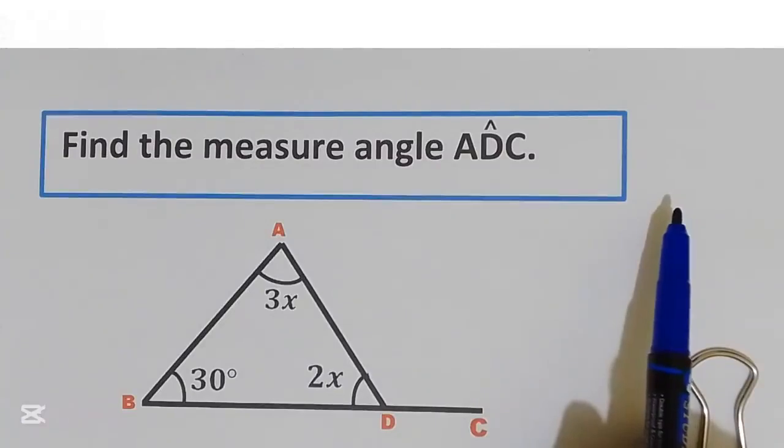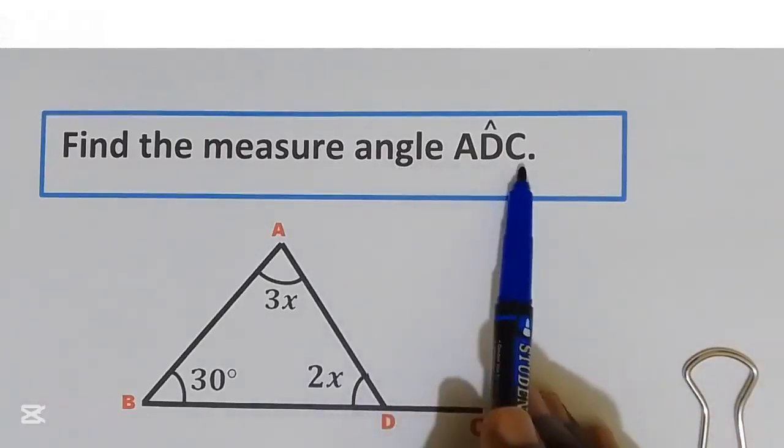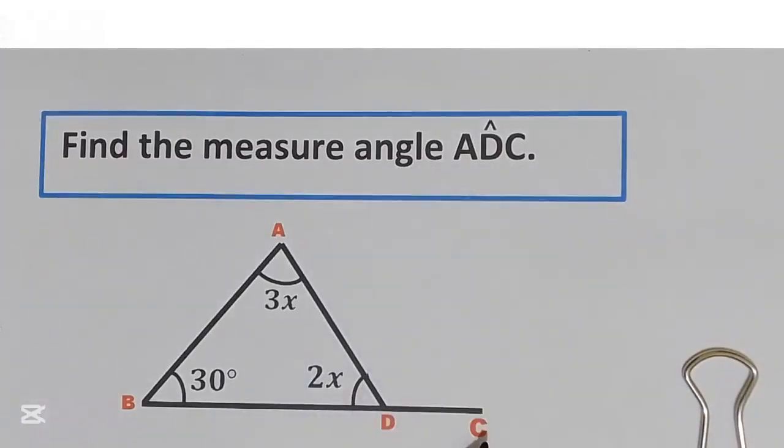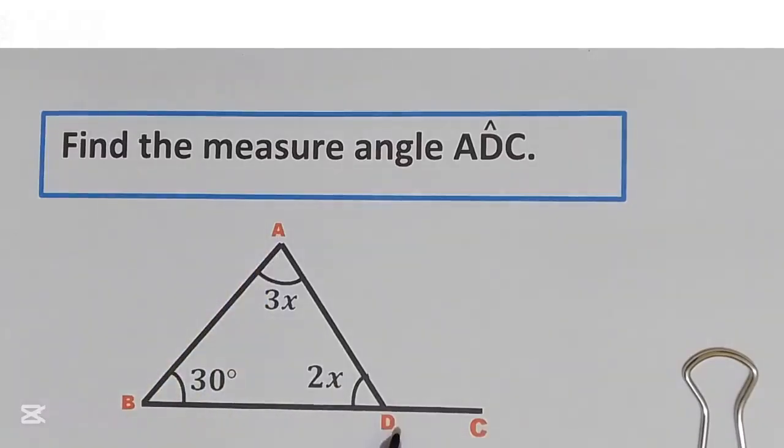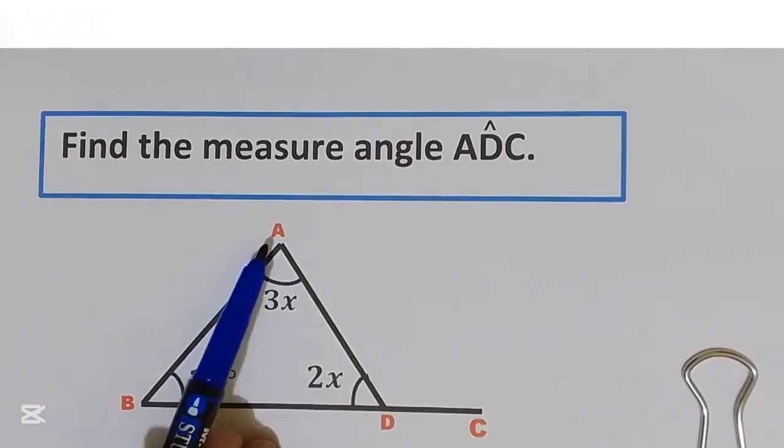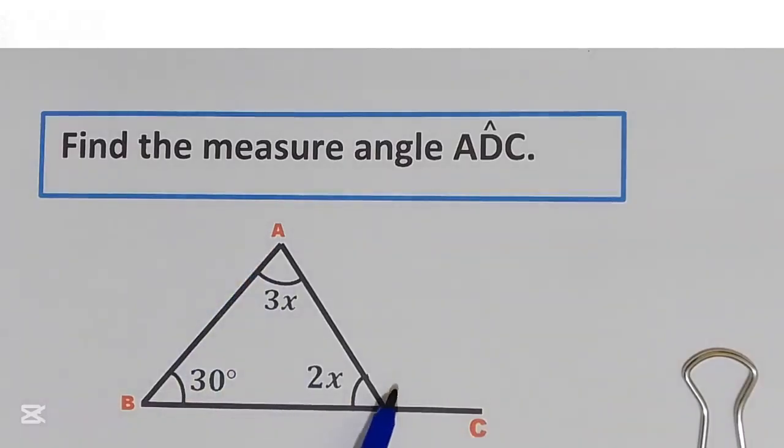We are supposed to find the measure of angle ADC. They have given to us triangle ABD with extended straight line BDC. The angle that we need is angle ADC. This angle here.